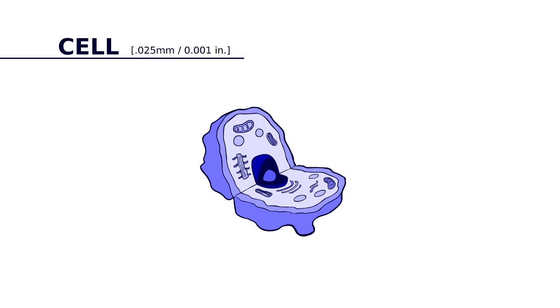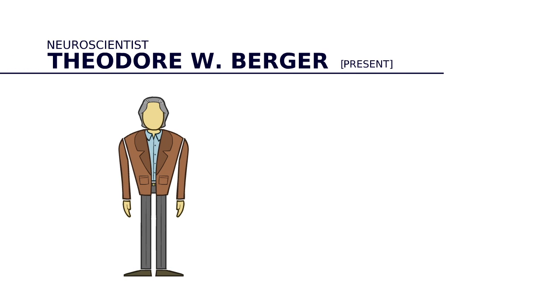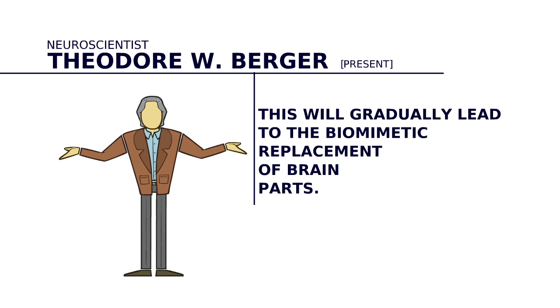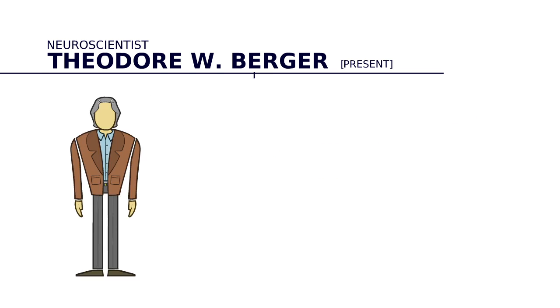Our cells are complex, but they aren't infinitely complex. Researchers are starting to develop silicon microchips to model and interface with our brain. Neuroscientist Theodore Berger has proposed that this will gradually lead to the biomimetic replacement of brain parts.